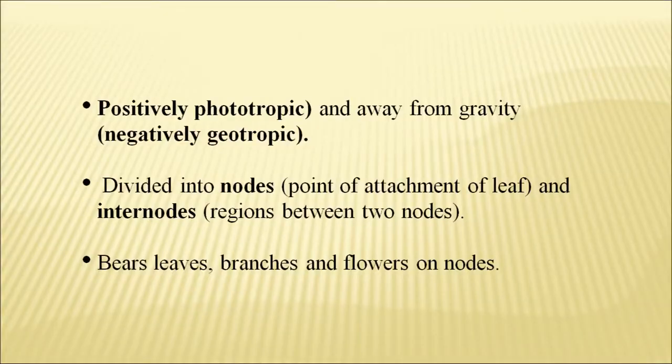The stem is positively phototropic — phototropic means it likes light and tries to grow towards light — and negatively geotropic. Geotropic means related to gravitational pull. Roots will go towards the gravitational pull but the stem will grow away from the gravitational pull, so the stem is called negatively geotropic.